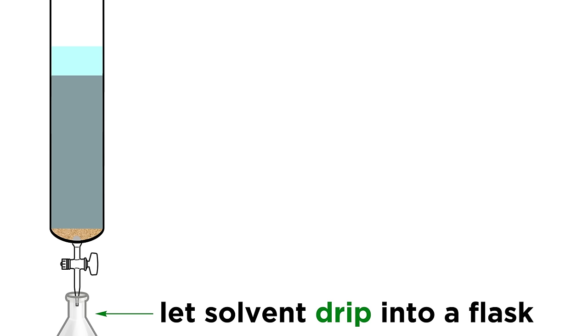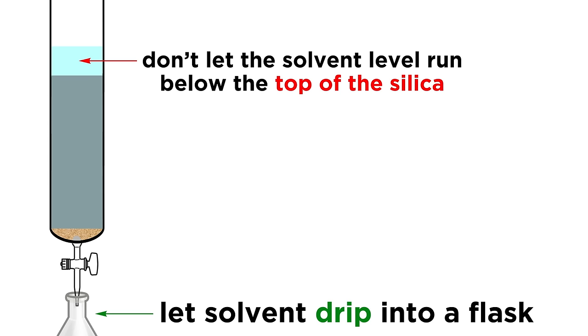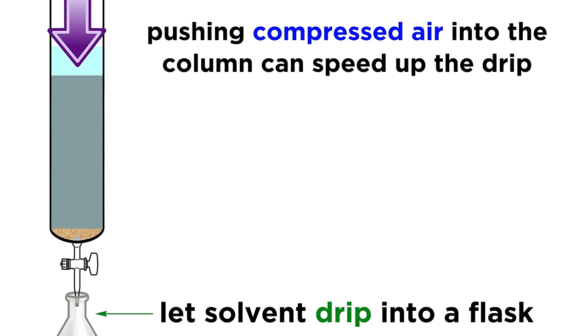Start letting the column drip into a flask to help the silica settle, but don't let the solvent level run below the top of the silica. Pushing compressed air through a tube fitted with a stopper at the top of the column can help things go faster during this stage, or any other stage during the separation if it seems necessary.